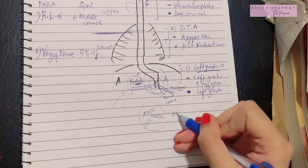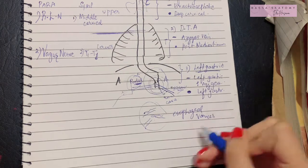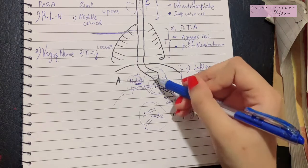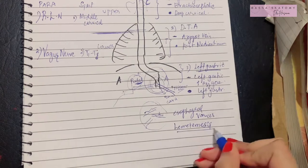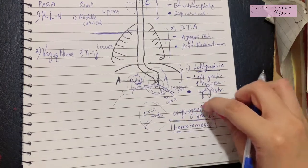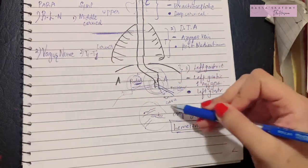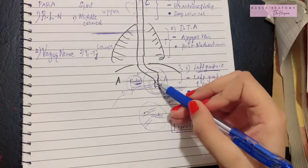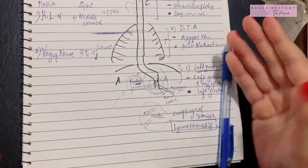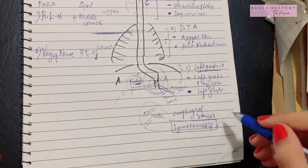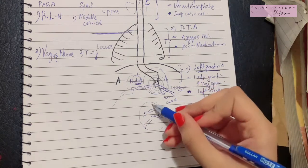These worm-like shadows are known as esophageal varices. Esophageal varices can bleed into the lumen of the esophagus, causing vomiting of blood known as hematemesis. So hematemesis occurs due to esophageal varices whenever portal hypertension is decompensated, and is confirmed by barium swallow radiography showing worm-like shadows at the lower end of the esophagus.